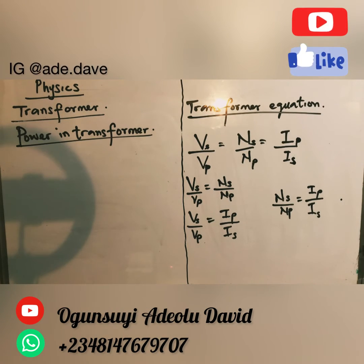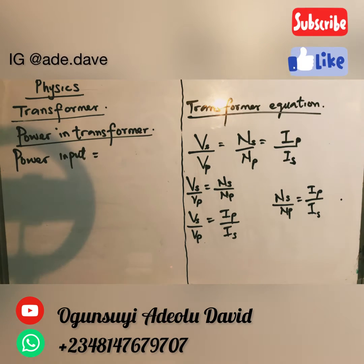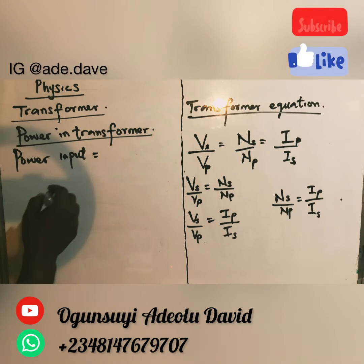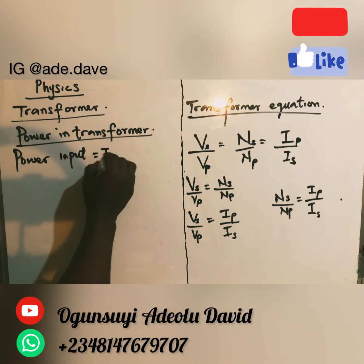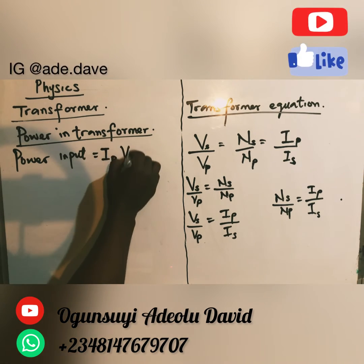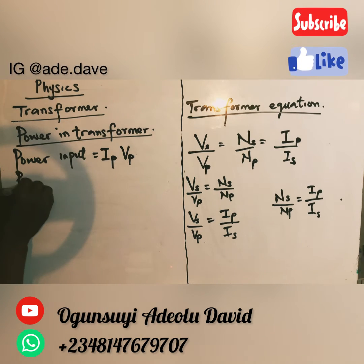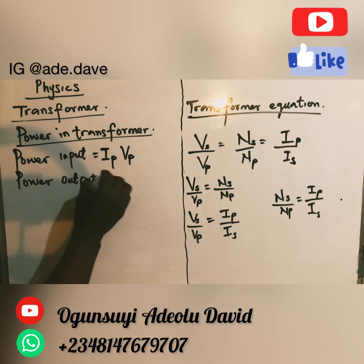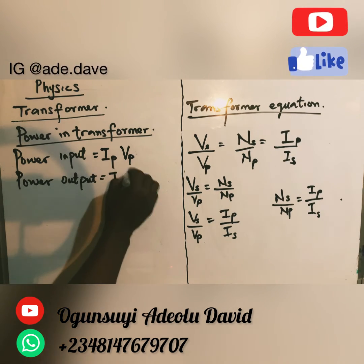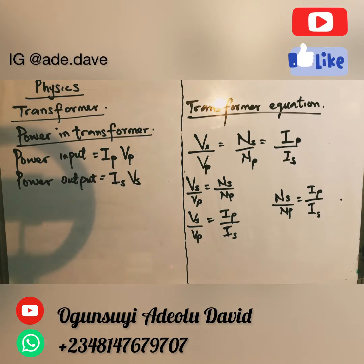Now, power and transformer. We have the power input and the power output. Remember, the input section of your transformer is the primary section, and your power is current times voltage, that is IV. So the power input is IP times VP, and the power output is IS times VS, because the secondary section of the transformer is the output section.